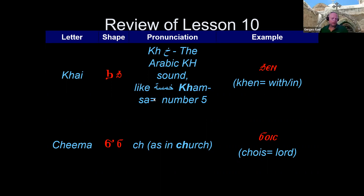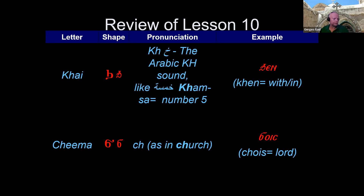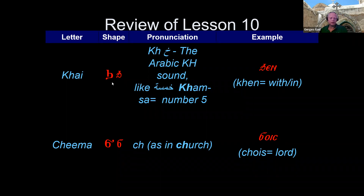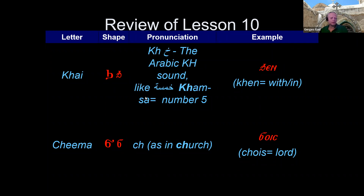Last week you took Lesson 10 of the Coptic alphabet — the last two letters, Chai and Chima, probably the two most difficult letters. As a review: Chai is like the Arabic 'ch' sound, like when you say 'Chamsa' or 'Molucheya.' It's pronounced 'chh,' like in 'Jhe Benyot' — 'in the name of the Father.'